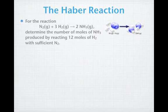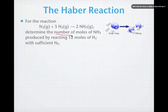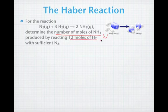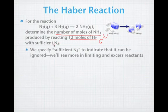Let's use the Haber reaction as a first example for looking at mole-to-mole calculations. In the Haber reaction — a very important reaction commercially in which ammonia is made from nitrogen and hydrogen — we're going to ask you to determine the number of moles of ammonia gas produced (our wanted) by reacting 12 moles of hydrogen gas (our given) in the reaction, with sufficient N₂. That just means there's more than enough N₂ to react, so we can ignore it. We'll come back to N₂ later when we cover limiting and excess reactants.